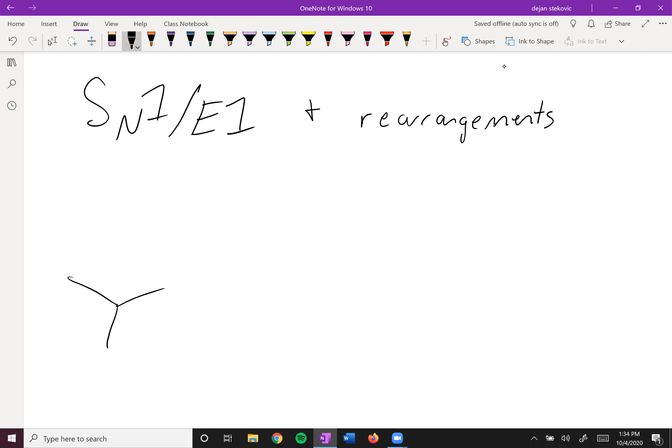For example, if you have this alkyl bromide and you put it in a solvent of water, you'll end up with a bunch of different products. You'll end up with the alcohol replacing the bromide, the alcohol somehow ending up over here, and then of course the elimination products as well. So you'll get a whole mess of things. Let's see how this occurs.